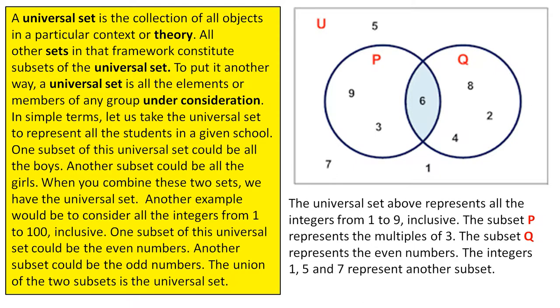When you combine these two sets, we have the universal set. Another example would be to consider all the integers from 1 to 100 inclusive. One subset of this universal set could be the even numbers. Another subset could be the odd numbers.